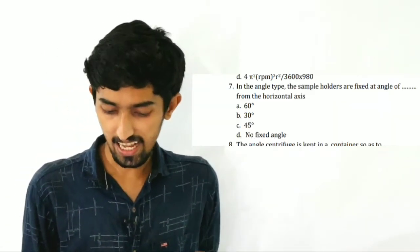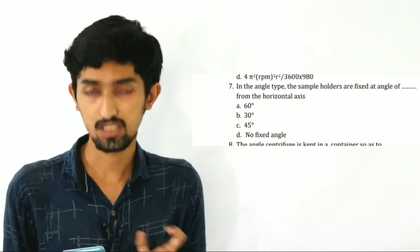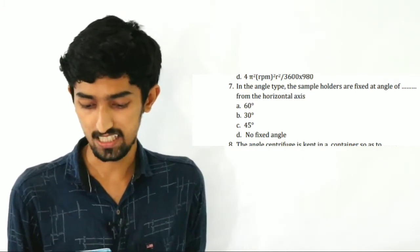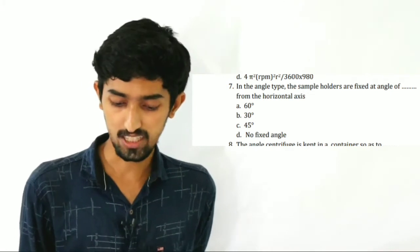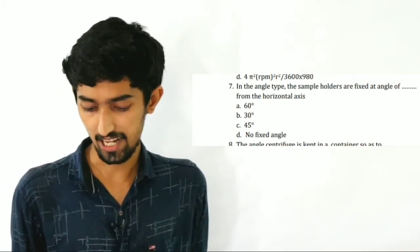The sample holders are fixed at an angle of dash from the horizontal axis. Option A: 60 degrees. Option B: 30 degrees. Option C: 45 degrees. Option D: No fixed angle. The answer is Option B: 30 degrees.